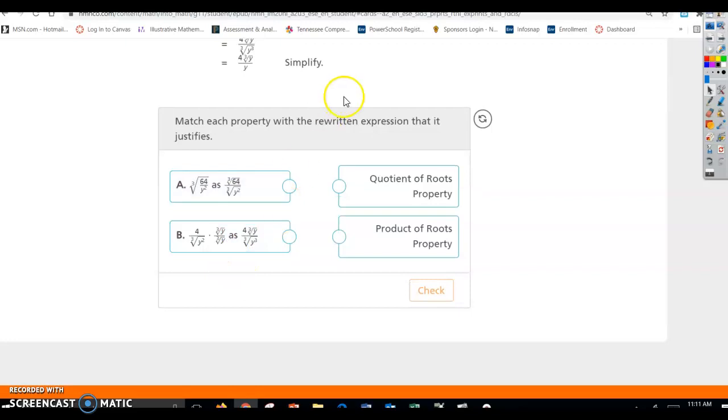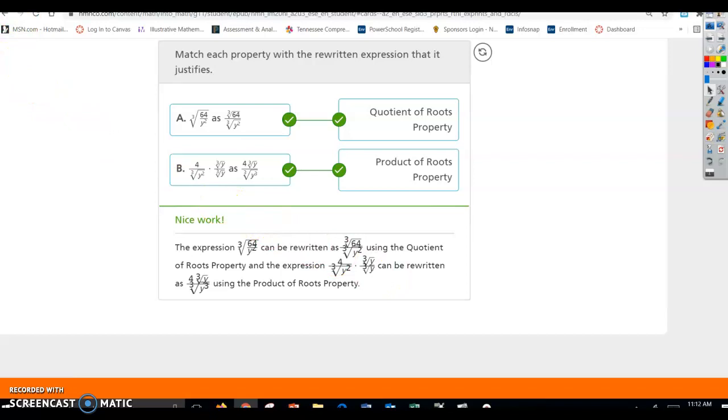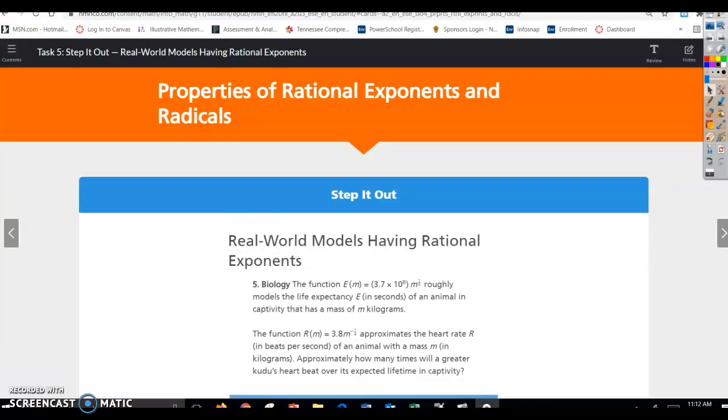Match each property with the rewritten expression that it justifies. So what do we have here? We have cube root of 64 over y squared as cube root of 64 over cube root of y squared. So this is just showing us the quotient root, quotient of roots property. Here we are. We're rationalizing the denominator, but when we do that, we are multiplying. So this is going to be a product of roots property. So we're just going to multiply across the top, multiply across the bottom, so that we can simplify that and make it look a little nicer. That's all for task. 6.2, fifth and final task.